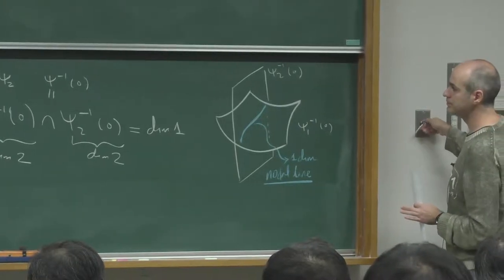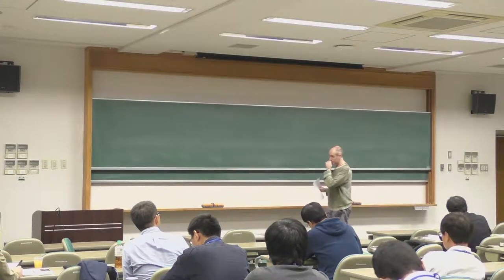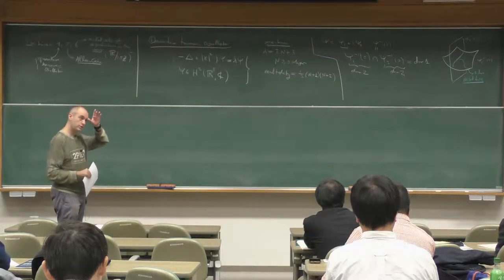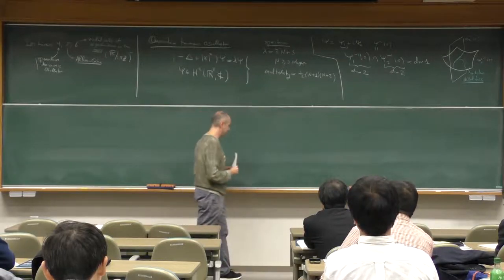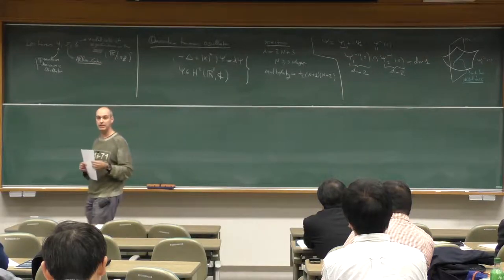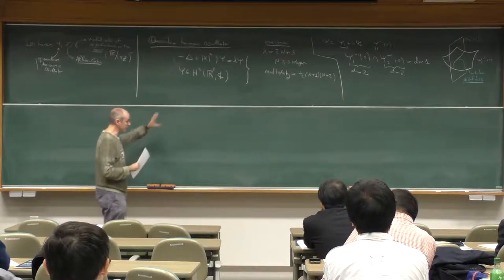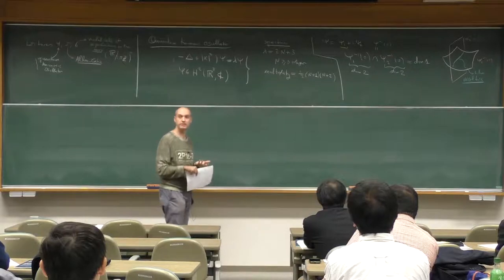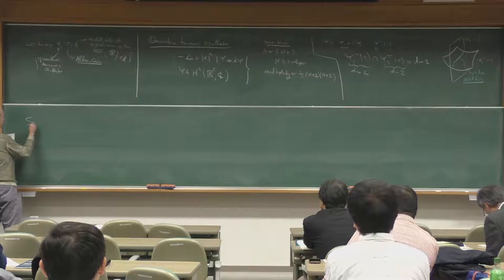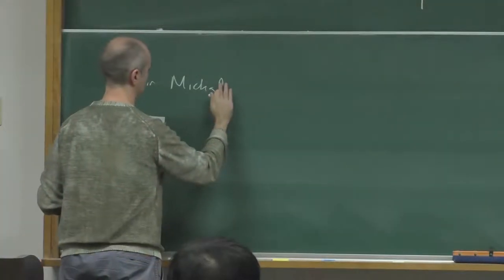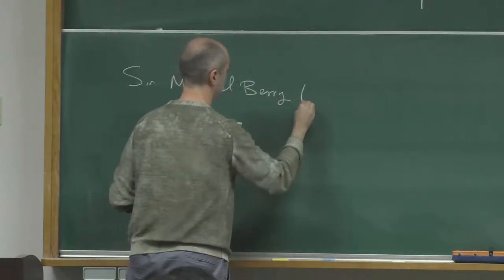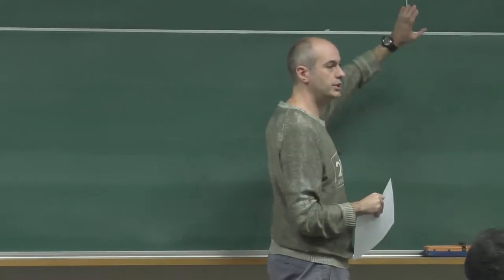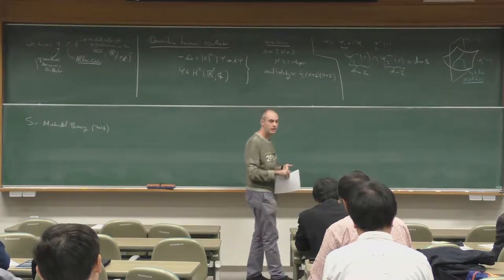When we analyze the nodal sets of the Helmholtz equation, we thought of surfaces. Now we have to think of lines, of curves in space. There is a well-known theoretical physicist, Sir Michael Berry, based at Bristol. He studied this problem and was interested, for physical reasons, in the topology that these nodal lines can exhibit. He conjectured in 2001 that the nodal lines of eigenfunctions of the harmonic oscillator can exhibit arbitrarily complicated topology.